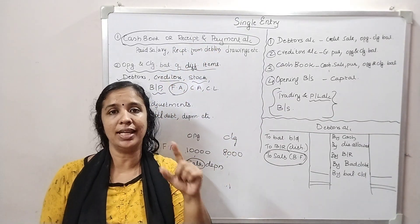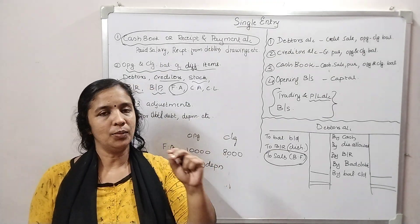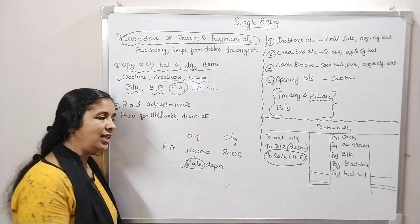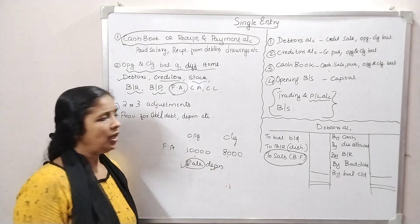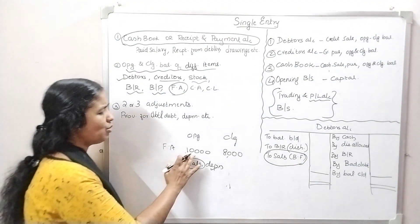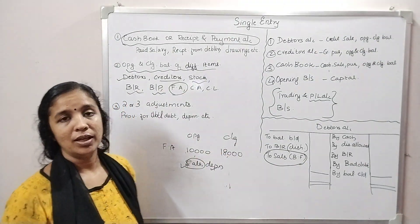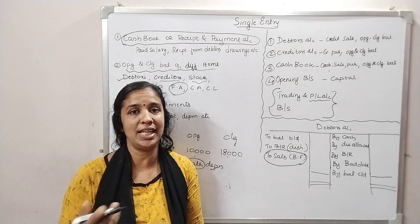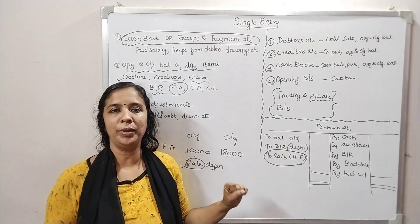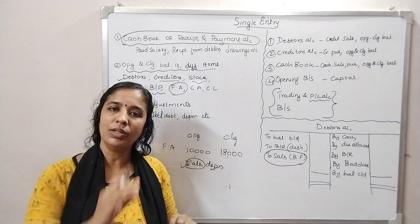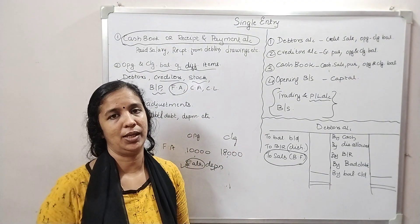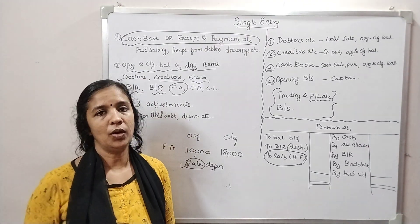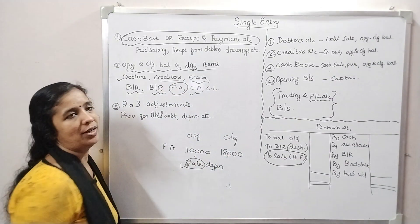The price is $10,000. As you can see, the price is $10,000 in cash. Now we have to confirm that the purchase of machinery will be correct. Let's look at the fixed asset in the opening balance and closing balance, and then the current asset in the opening balance and closing balance.